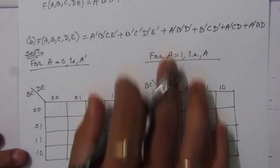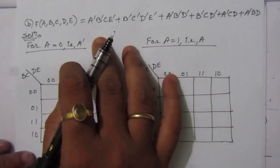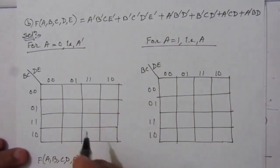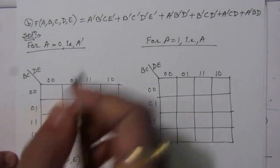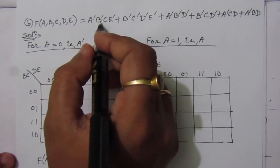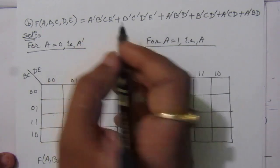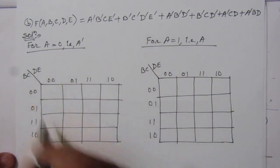Now let us solve the second part of the problem. In the second part we are given a boolean expression and we have to find the minimized boolean expression. We have terms: A-bar B, A-bar B-bar C E-bar, and A-bar is this map, so we will fill up here.